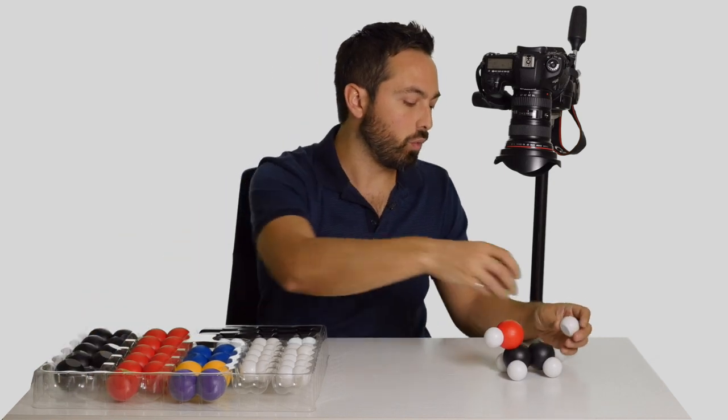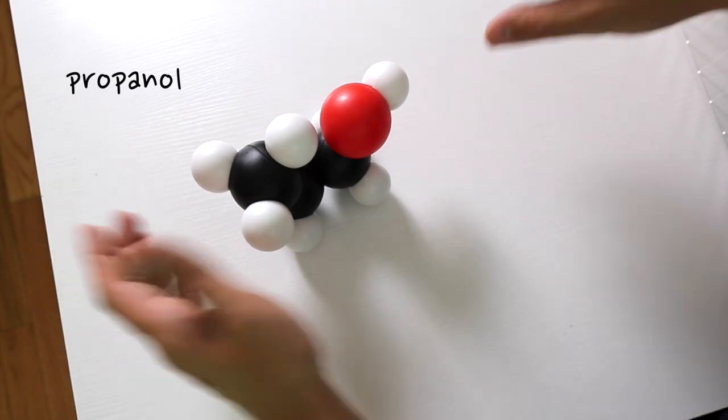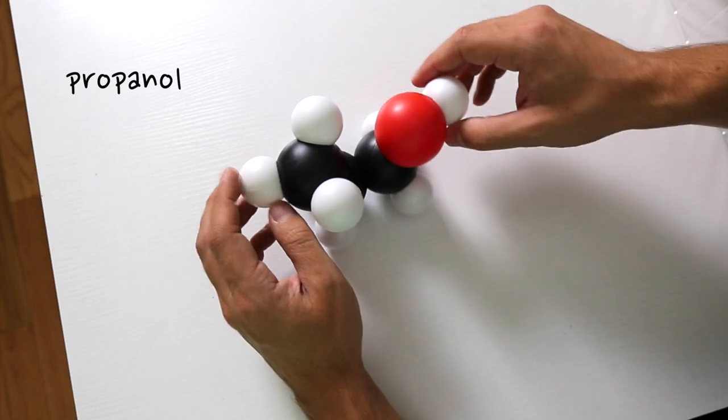If we add another one we would have propanol. That is your propanol molecule. It kind of looks like a two-headed dog.